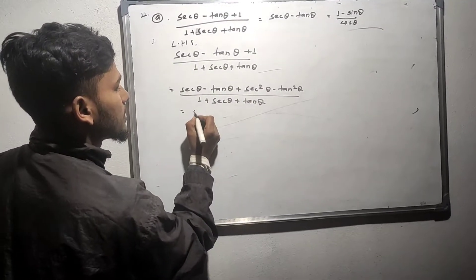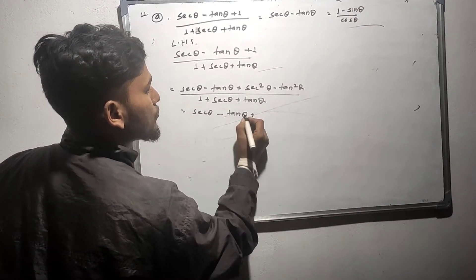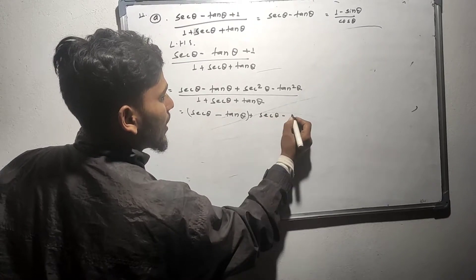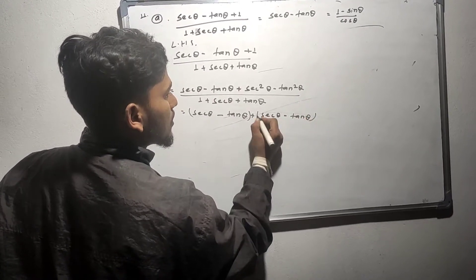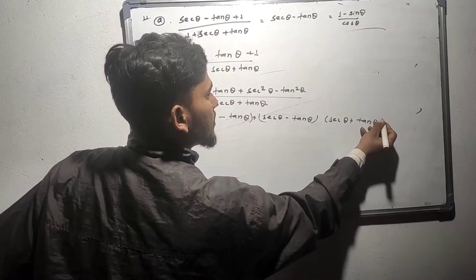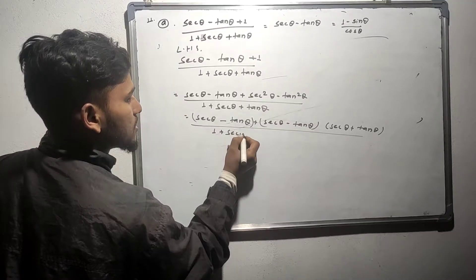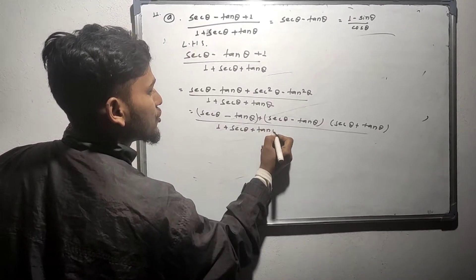We have sec theta minus tan theta. This will be a minus b just to be a plus b. If we are to think that 1 plus sec theta plus tan theta.